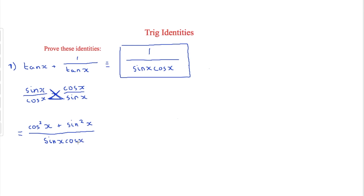When we look at this, cos squared x plus sin squared x is always equal to one thanks to our first trig identity. So all we do is replace that with one, giving us one over sin x times cos x. And that is your answer for that particular question.